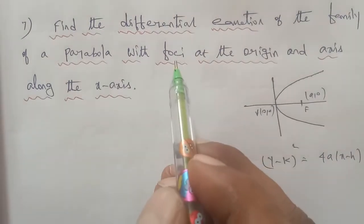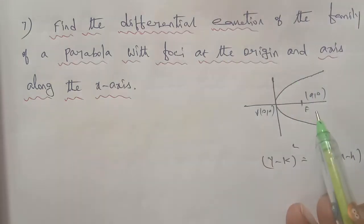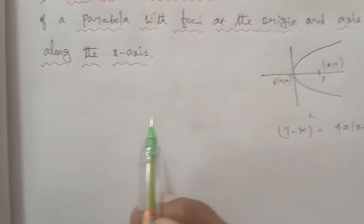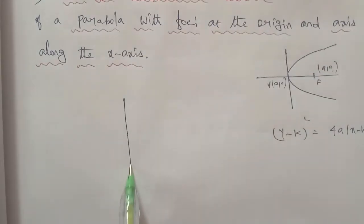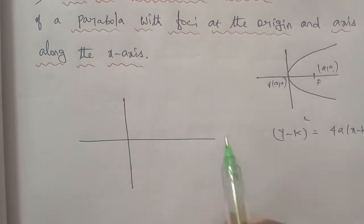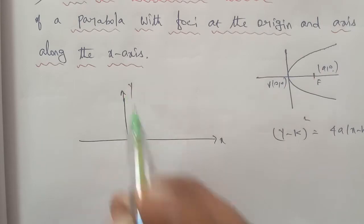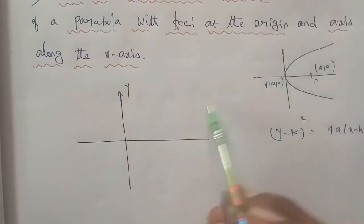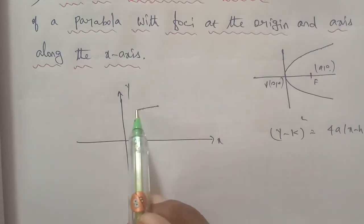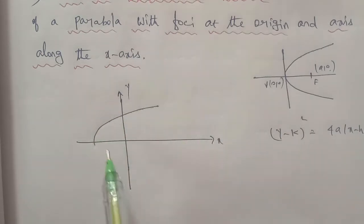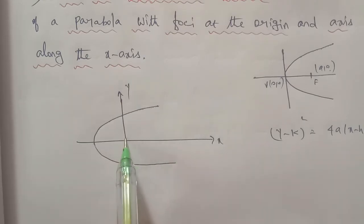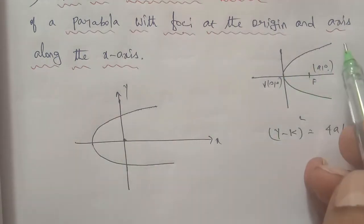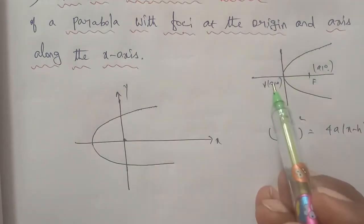Given that the focus is at the origin, so the focus is (0, 0). The axis is along the x-axis, so k equals 0. With the focus at the origin and axis along the x-axis, the vertex is at (minus a, 0).